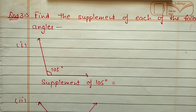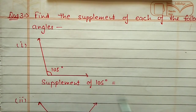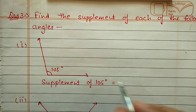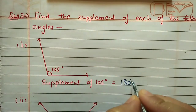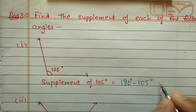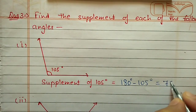Question number three: find the supplement of each of the following angles. To find the supplement, we subtract from 180 degrees; for complement it is from 90 degrees. First angle is 105 degrees, so the supplement of 105 will be 180 minus 105, equal to 75 degrees.